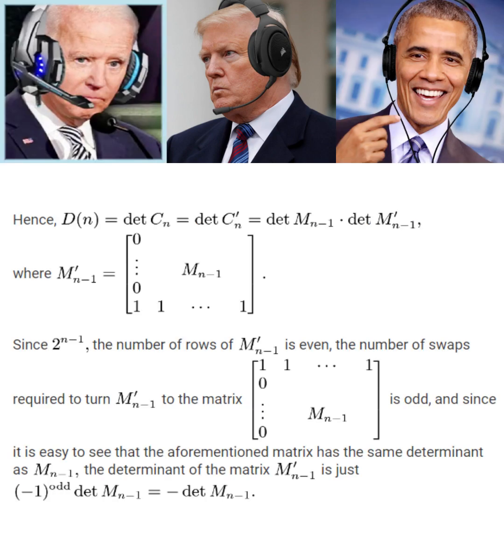Continuing on Obama's point, since M prime sub N minus 1 has an even number of rows, the number of swaps required to turn M prime sub N minus 1 to this nicer form here that has the same determinant of M sub N minus 1 is odd. Hence, the determinant of M prime sub N minus 1 is the negation of the determinant of M sub N minus 1.